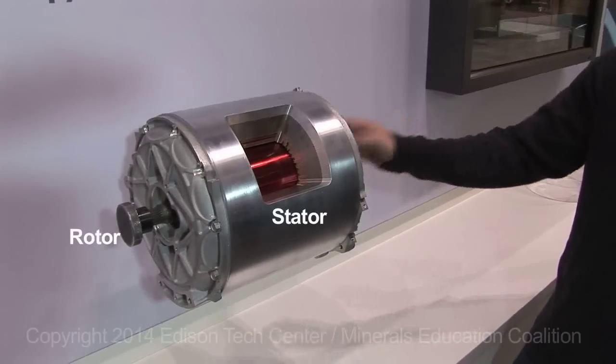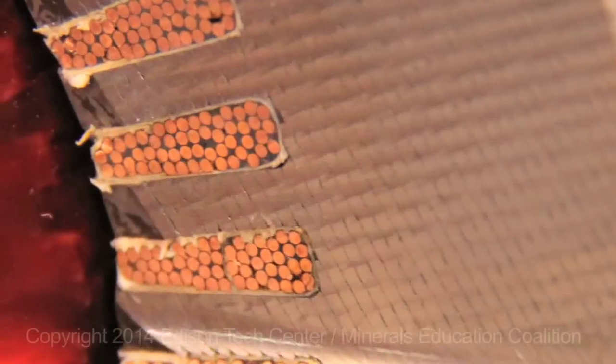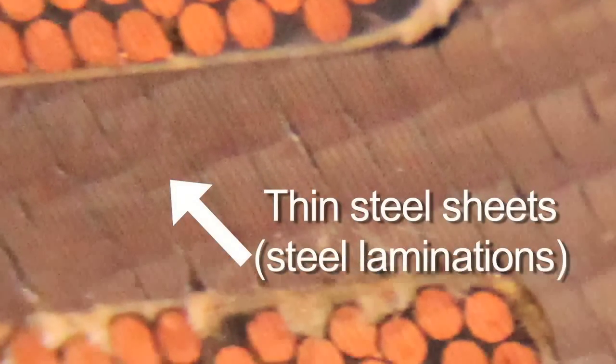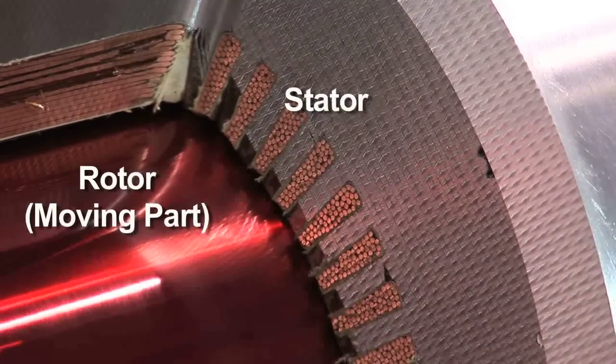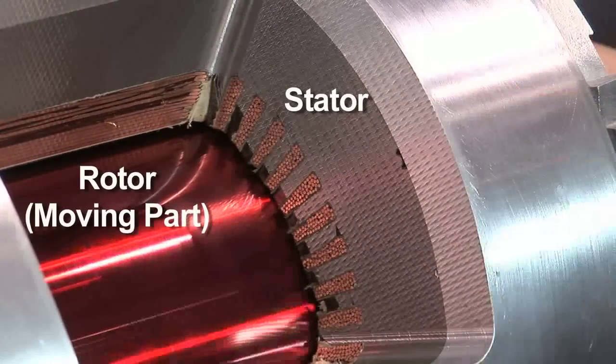So the motor consists of two parts, the rotor and the stator. So you have your aluminum, you have your steel and you have your copper. We use steel laminations which are made with iron. Your copper is actually what creates your magnetic field around your rotor. Your steel laminations here actually concentrate your magnetic field.